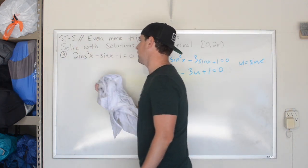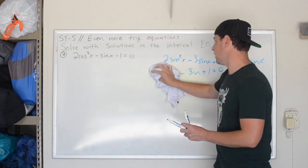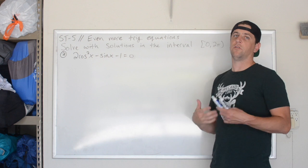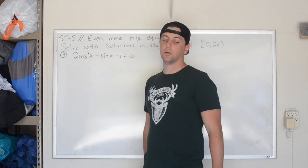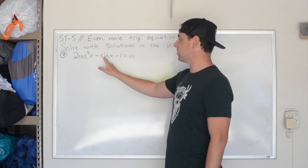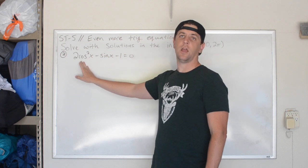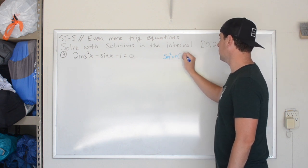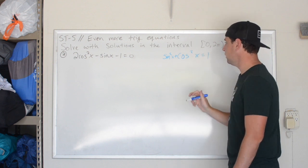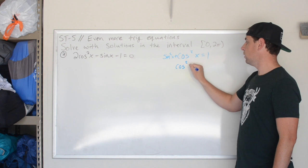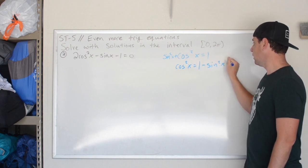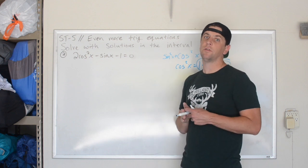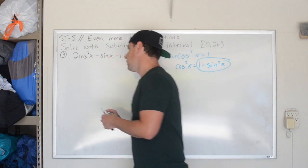This problem has a similar format — cosine squared and sine — but because they're not all sines or all cosines, it causes a working issue. We need to rewrite cosine in terms of sine using the Pythagorean identity: sine squared x plus cosine squared x equals 1, which means cosine squared x equals 1 minus sine squared x. I'm going to substitute 1 minus sine squared in for cosine squared so that everything is in terms of sines.